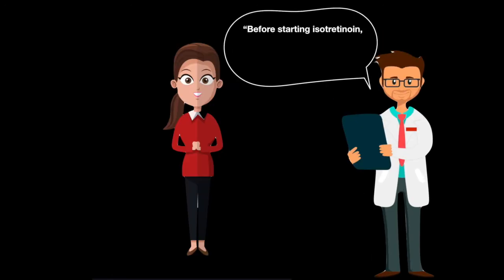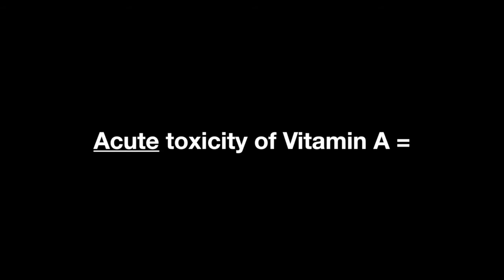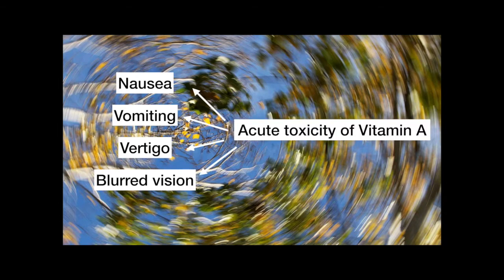Therefore, before starting isotretinoin, a patient must show a negative pregnancy test and be using two forms of contraception. Regarding acute toxicity of vitamin A, nausea, vomiting, vertigo, and blurred vision are all symptoms.